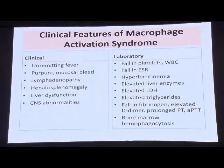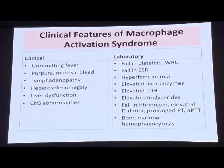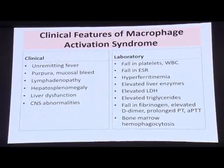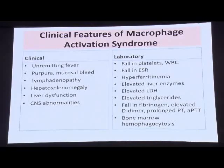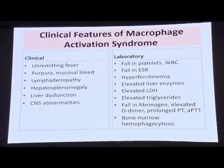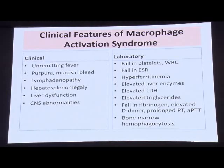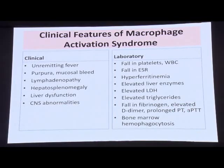Clinical features of macrophage activation syndrome overlap with hemophagocytic lymphohistiocytosis and include remitting fever, purpura, mucosal bleed, lymphadenopathy, hepatosplenomegaly, liver dysfunction, and CNS abnormalities. Laboratory abnormalities include falling platelets and WBC, falling ESR, high ferritin, high liver enzymes, elevated LDH, elevated triglycerides, falling fibrinogen, elevated D-dimers, prolonged PT/APTT, and bone marrow hemophagocytosis.